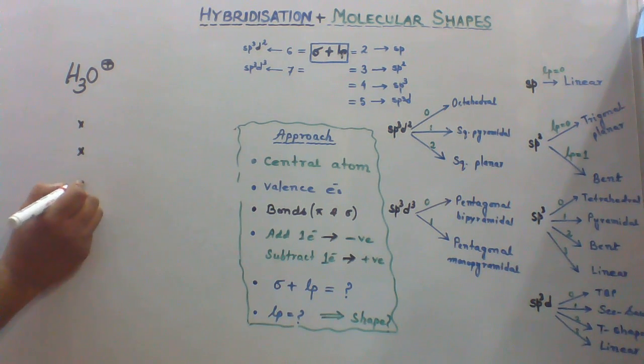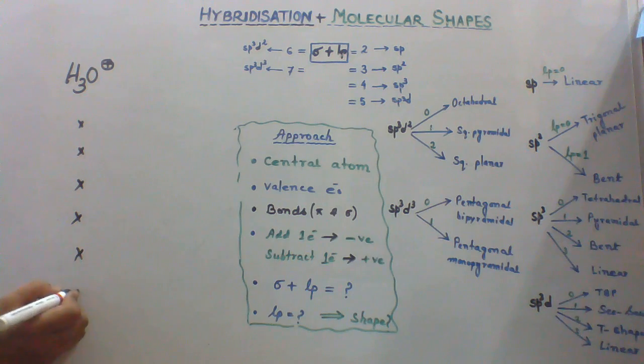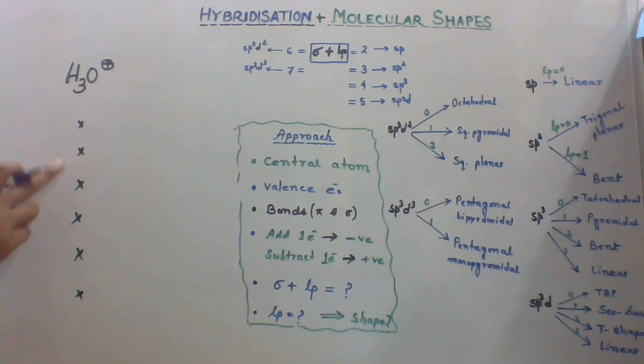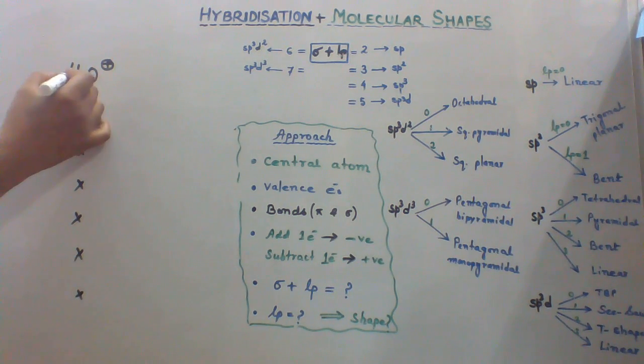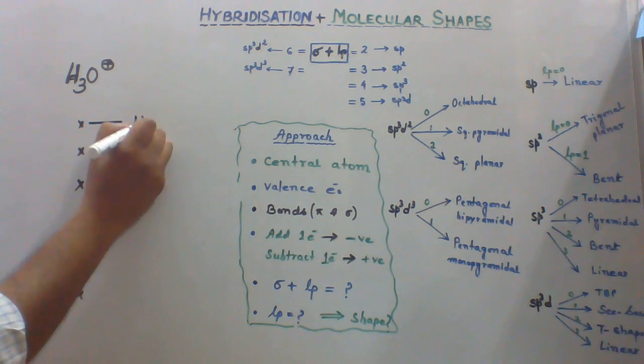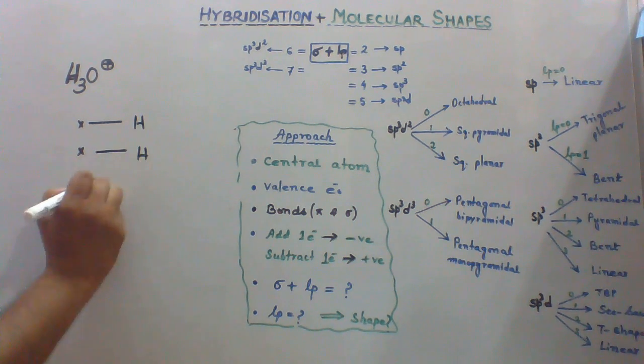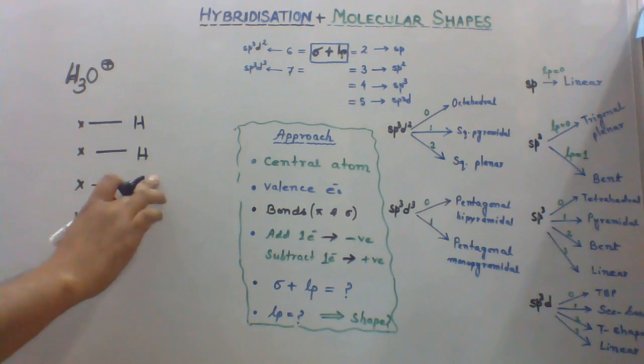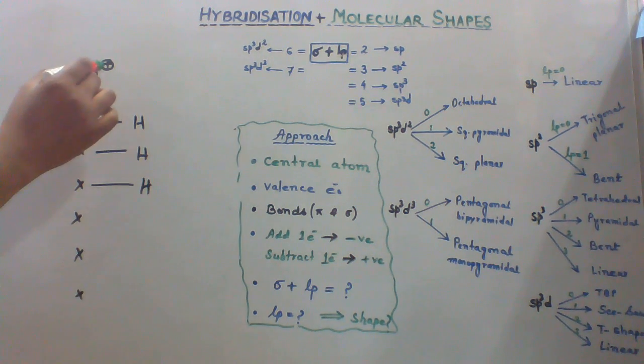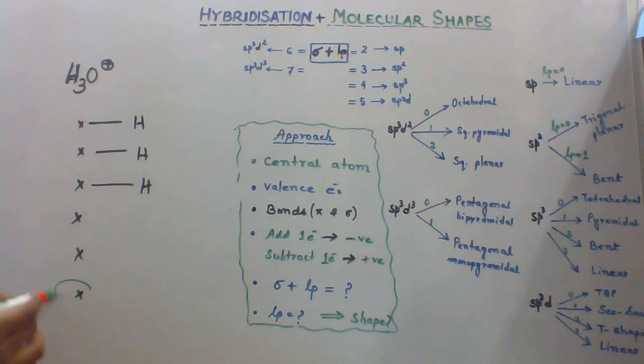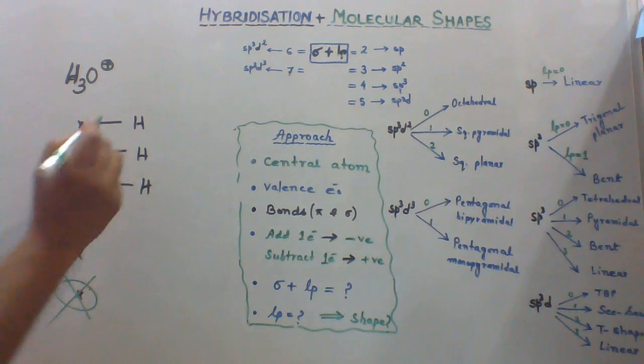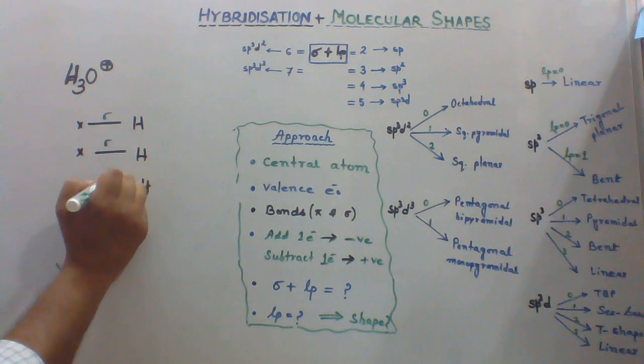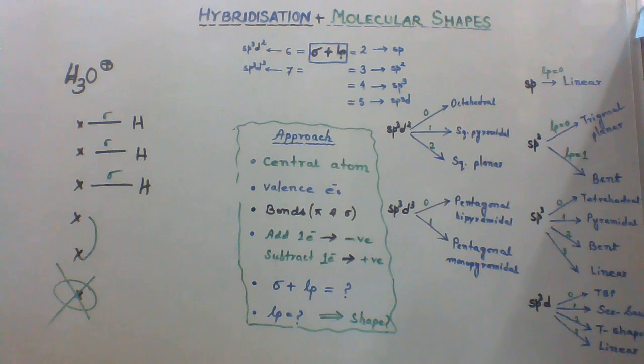And we have 3 hydrogen atoms. Hydrogen valence is 1, so single single bonds. There is 1 positive charge over oxygen. So this electron is getting removed because of positive charge.